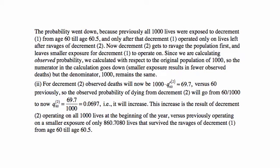For part c, part 2: observed deaths from decrement 2 will now be 1000 × q'₆₀⁽²⁾ = 69.7 versus 60 previously. So the observed probability of dying from decrement 2 increases from 0.060 to 0.0697. Note that now the prime probability equals the non-prime probability for decrement 2, because decrement 2 acts first and other decrements do not affect it. This increase results from decrement 2 now operating on all 1000 lives, versus previously only 860.708 survivors.